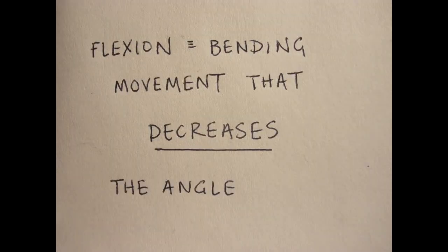Let's start with flexion. The formal definition of flexion is a bending movement that decreases the angle between two parts of the body.